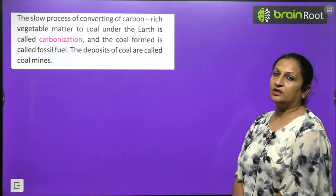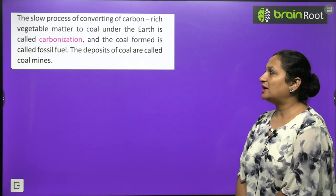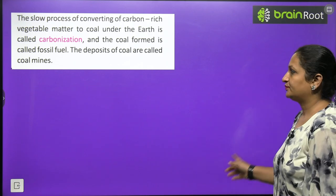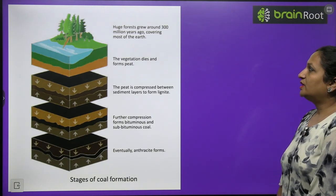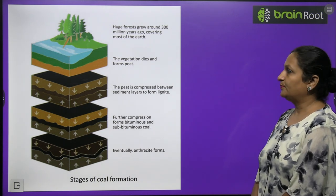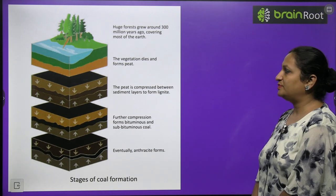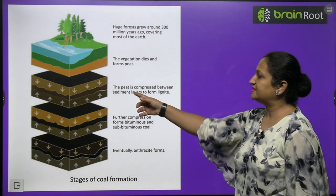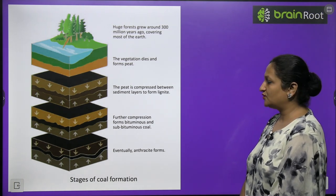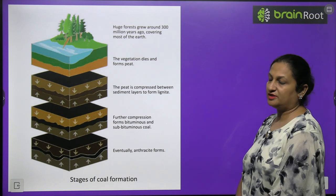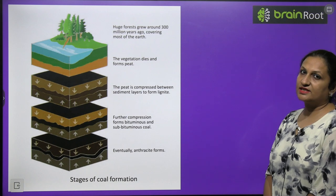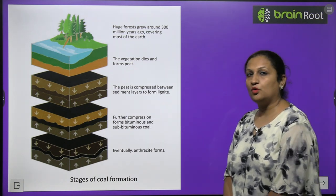The stages of coal formation: huge forests grew around 300 million years ago covering most of the earth. Then vegetation died and formed peat. Peat was compressed between sediment layers to form lignite. Lignite underwent further compression to transform into bituminous and sub-bituminous coal. Eventually, anthracite is formed. These are the stages of coal formation development.